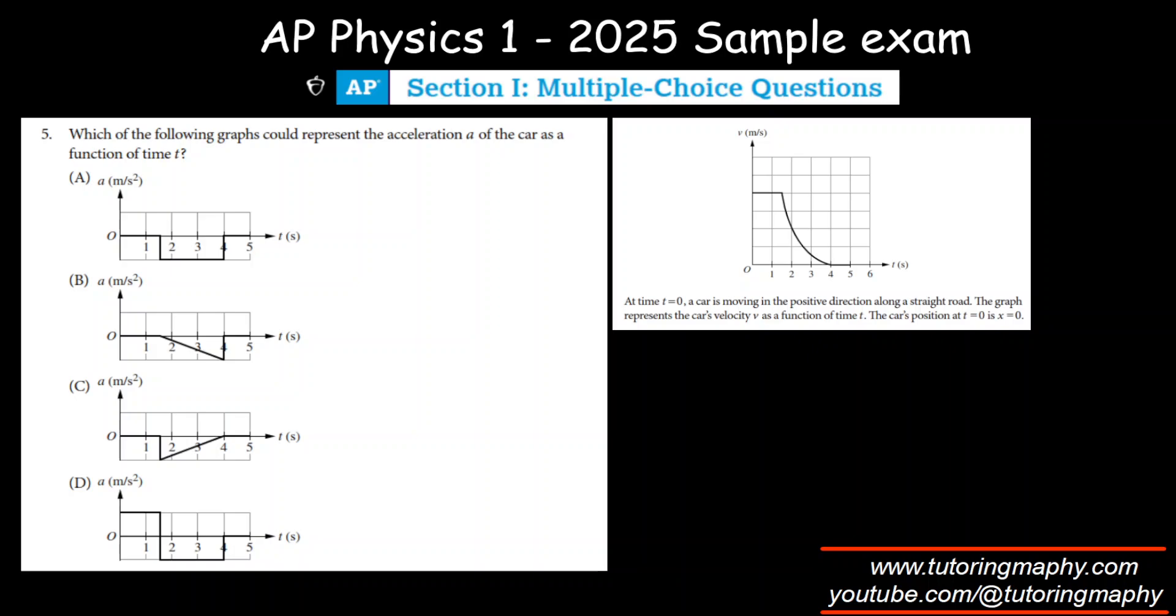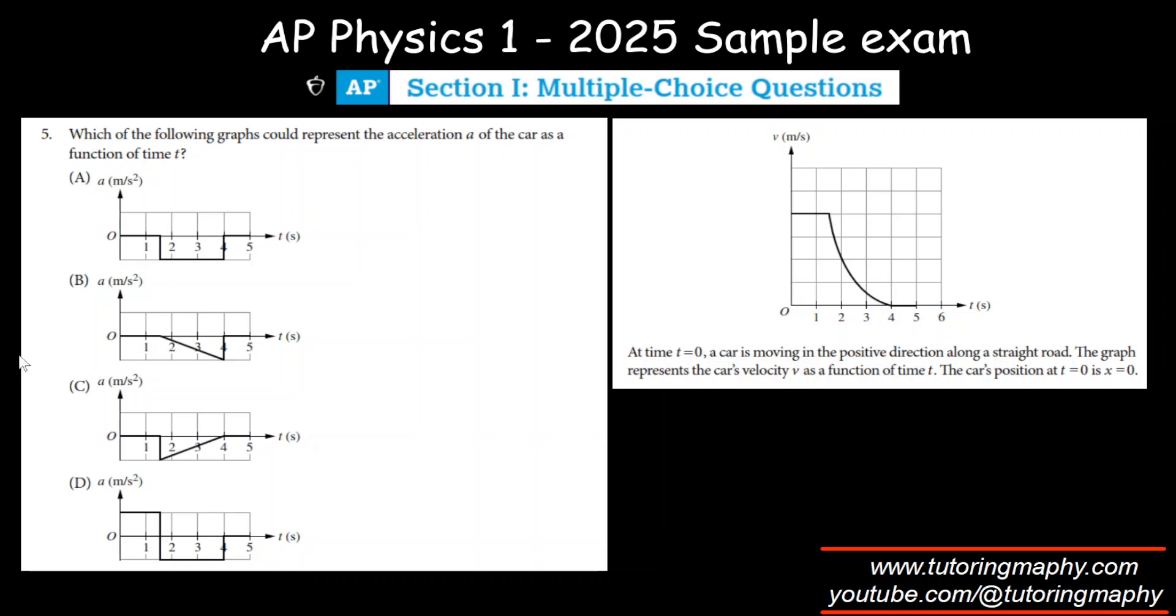There's another question related to the same graph. They're asking which of the following graphs would represent acceleration as a function of time. We just talked about this a couple of questions back—the slope of the velocity-time curve gives the acceleration.